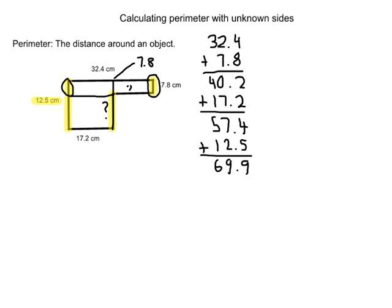We could subtract it. We could subtract 12.5 minus 7.8. This will give us the remaining distance of the unknown side that we're trying to figure out. 12.5 minus 8 is 7, cross that out, we have 11 and we have 4.7. We now know that the remaining side, the unknown side, is 4.7 centimeters.